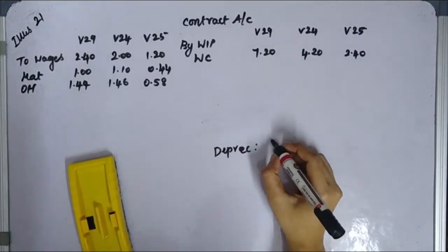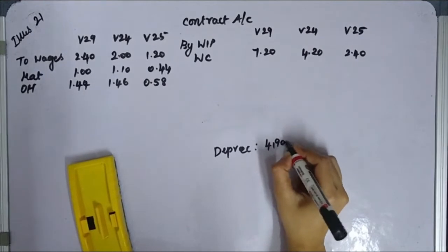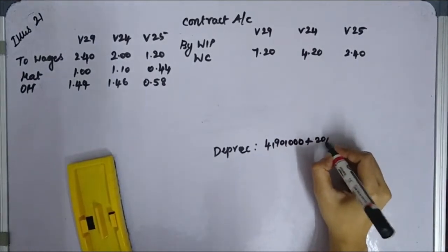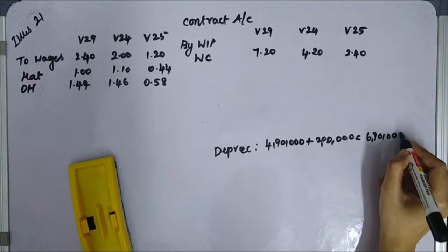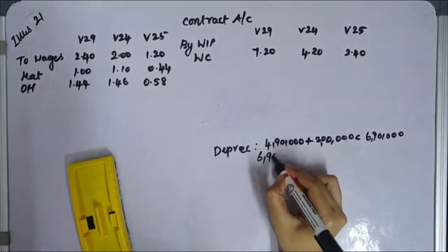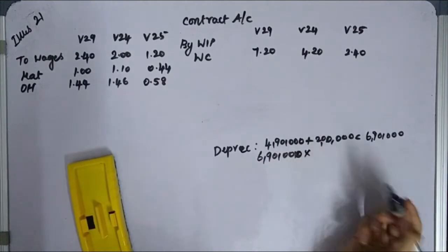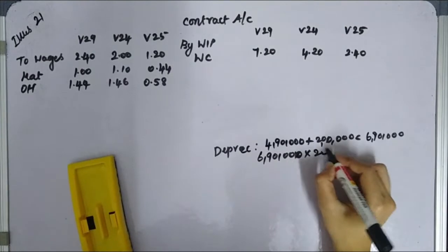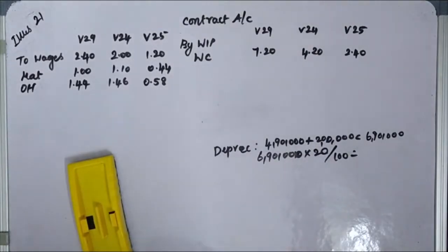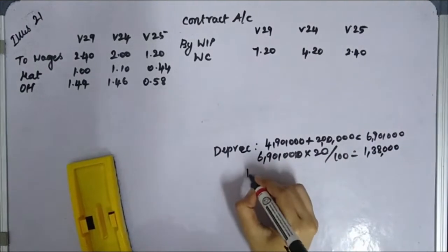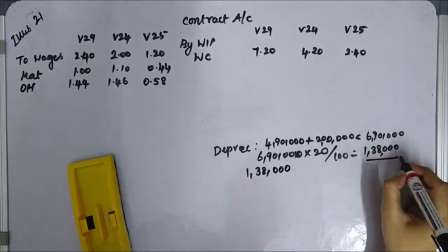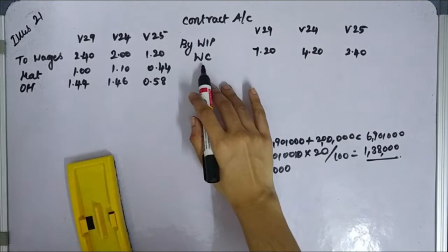Depreciation calculation: Plant and equipment is Rs 4,90,000 plus vehicles Rs 2,00,000, giving a total of Rs 6,90,000. Applying 20%, the total depreciation comes to Rs 1,38,000. This Rs 1,38,000 will now be allocated to the three contracts in proportion to the value of work certified.